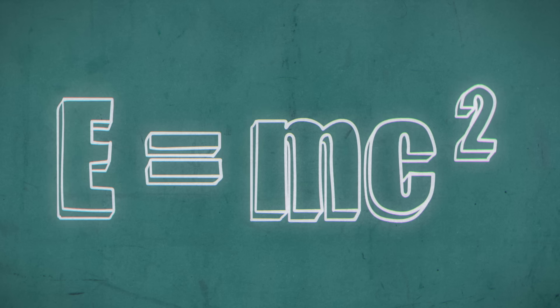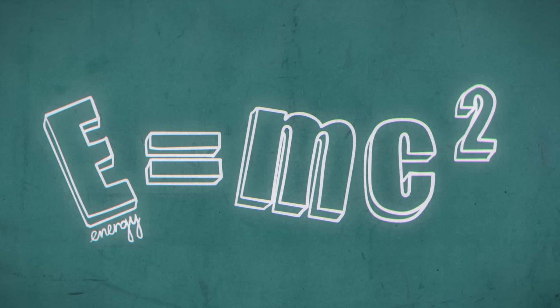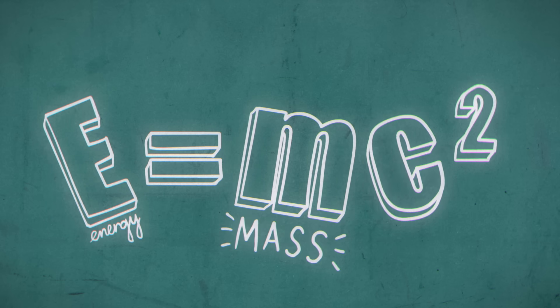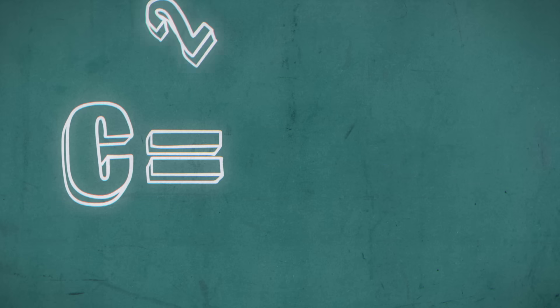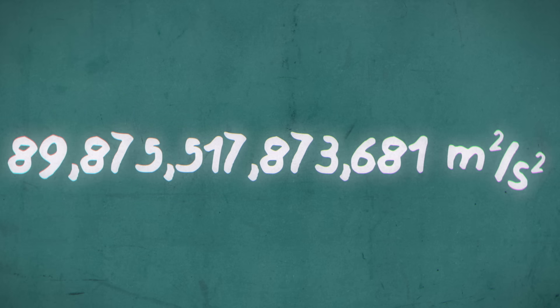In Einstein's equation, E stands for energy, m for mass, and c for a constant. Specifically, the speed of light in a vacuum. C squared is a huge number, which means it requires enormous amounts of energy to move even small amounts of mass close to the speed of light.